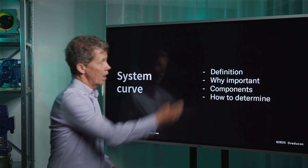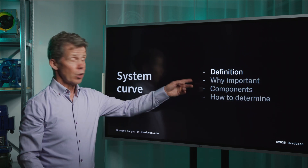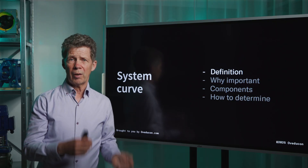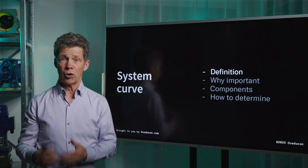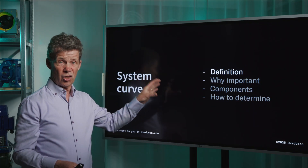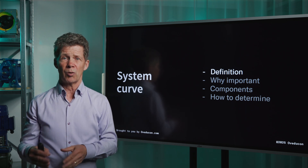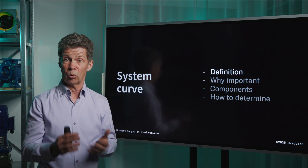In this video we have the following subjects for you, and we start with the definition. So what is a system curve? A system curve is a graphical representation that shows you the relationship between the flow rate and the head required by the system. And you can find that system curve line in many pump calculation programs that you can find on the internet.